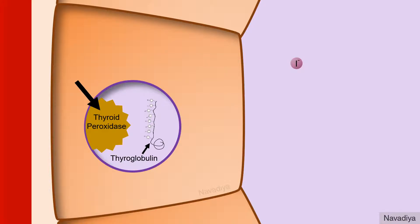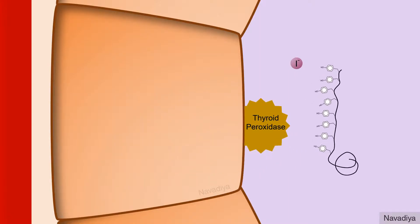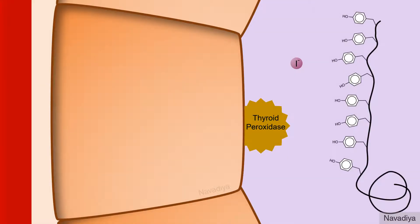The vesicle also has enzyme thyroid peroxidase on the intravesicular surface. Now the vesicle fuses with the apical membrane and releases thyroglobulin into the colloid. This also brings thyroid peroxidase on the cell membrane facing the colloid.